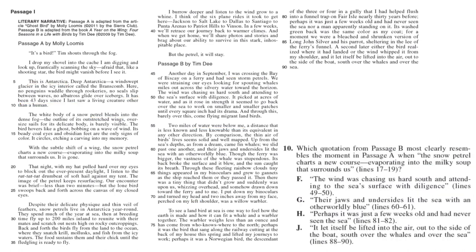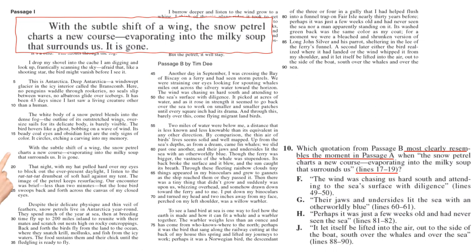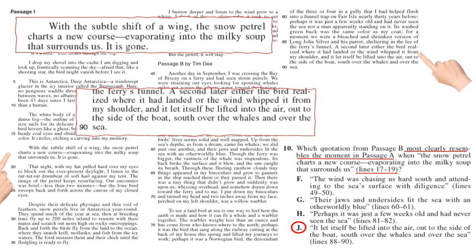Number ten: which quotation from passage B most clearly resembles passage A lines 17 to 19? Lines 17 to 19 say 'the subtle shift of the wing, the snow petrel charts a new course, evaporating into the milky soup that surrounds us — it is gone.' So which choice describes the bird leaving? That's going to be choice J: 'A second later, either the bird realized it had landed on a human or the wind whipped it from my shoulder and it let itself be lifted into the air out to the side of the boat.' It is leaving in that passage as well. The answer is J.